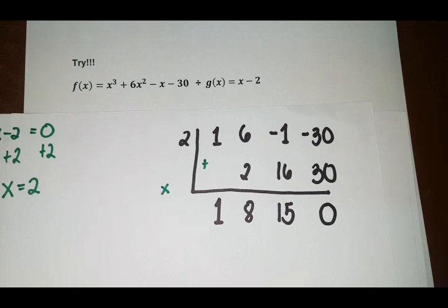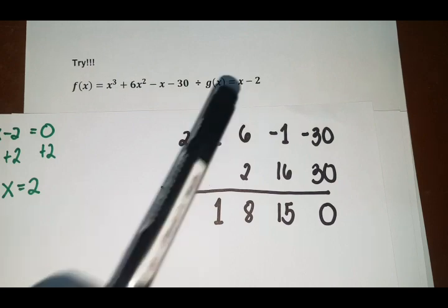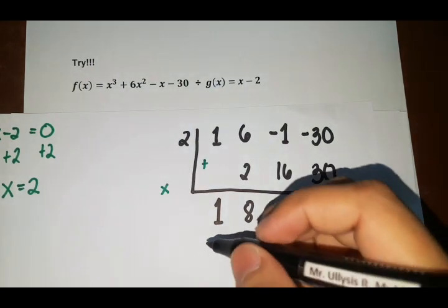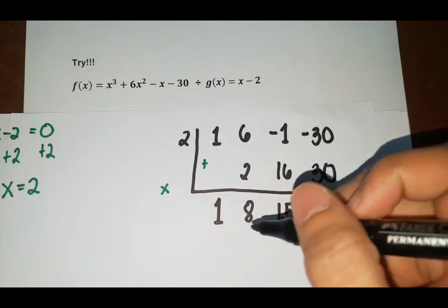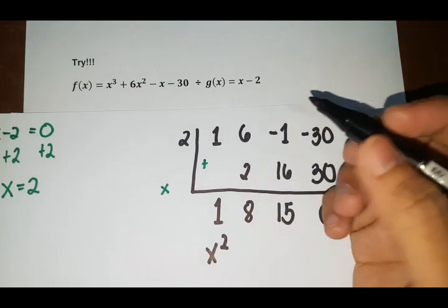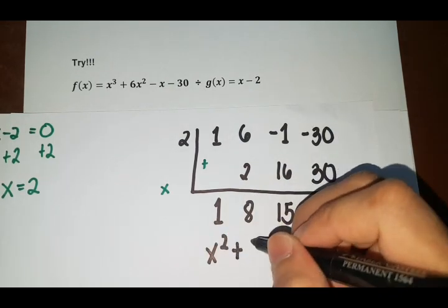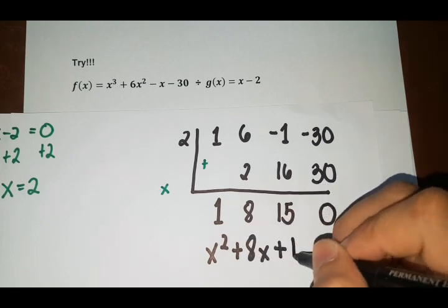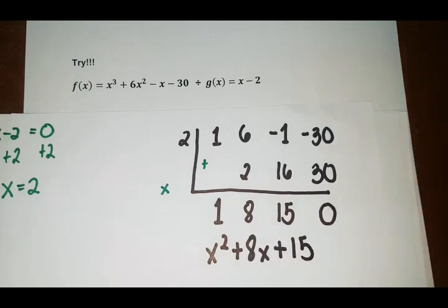So again, how are you going to write this as a polynomial? So we have x cubed divided by x, so that is x squared. So our first leading term, so x squared or 1x squared plus 8x plus 15. And we don't have the remainder. So that is your answer.